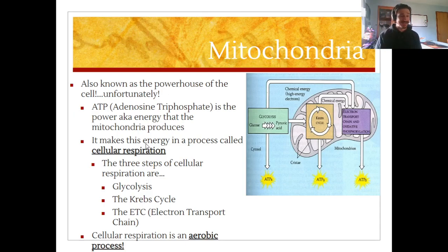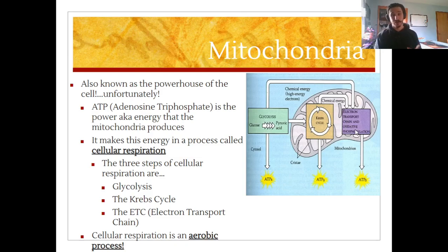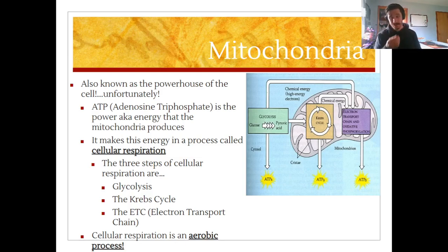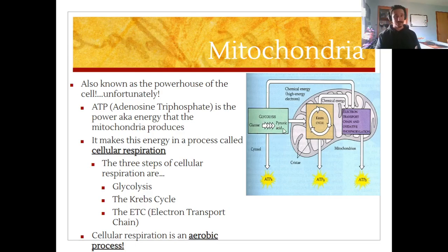There are three steps to cell respiration. Looking at the illustration on the right, from left to right we have glycolysis, the Krebs cycle, and the electron transport chain, also known as oxidative phosphorylation. Don't get too bogged down with that lengthy term — just call it the electron transport chain, or ETC. Notice that the Krebs cycle and the ETC happen inside the mitochondria, while the only step of cell respiration not to occur within the mitochondria is glycolysis.